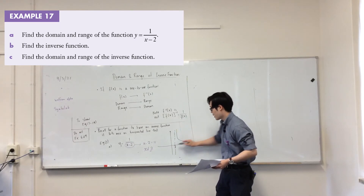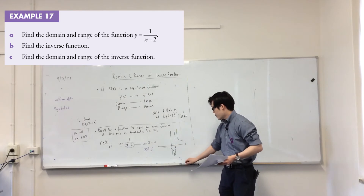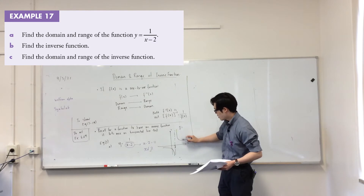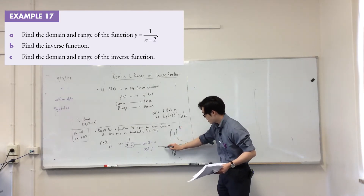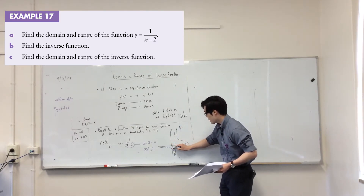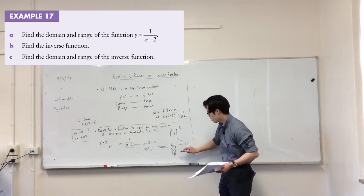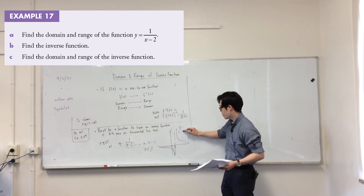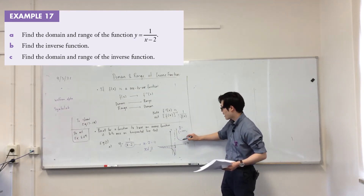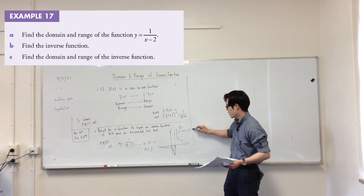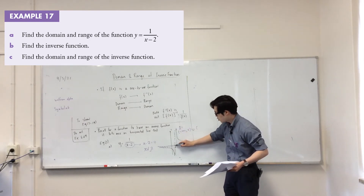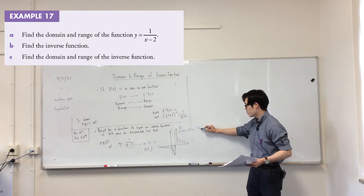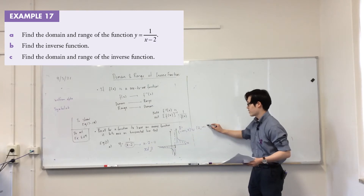So this graph looks like this. Looking at it graphically, we can see the domain. It can take every single negative and positive value up until 2. So it can take all the negative infinite values up to 2, in union with, from 2, it can take every x value going infinitely in the positive direction.